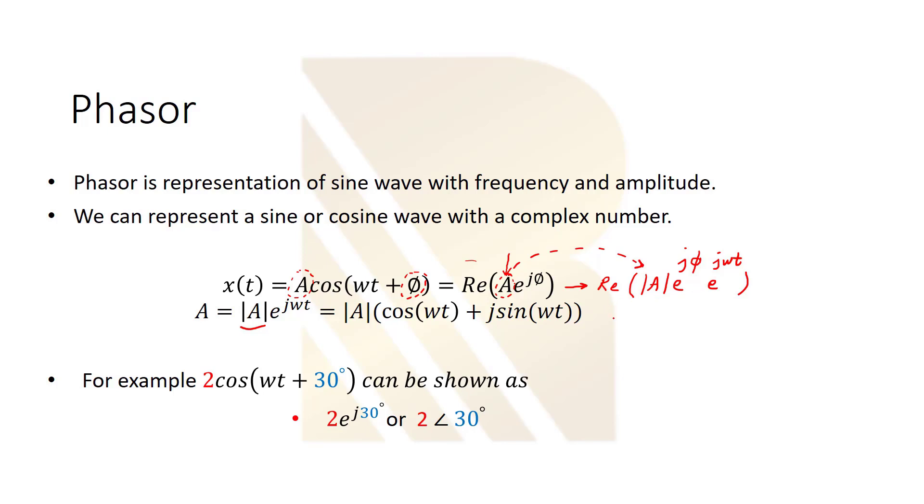And how can we write this? We can write this like a real part of A, e^j. We have to add them together. So we have something like this at the output.